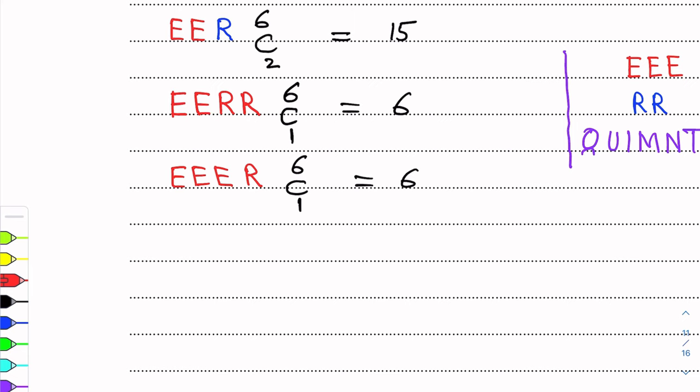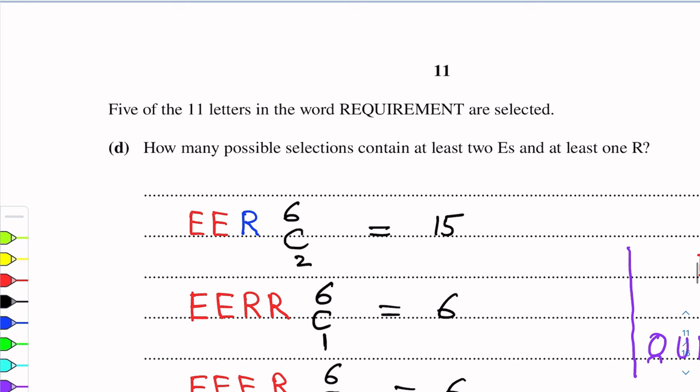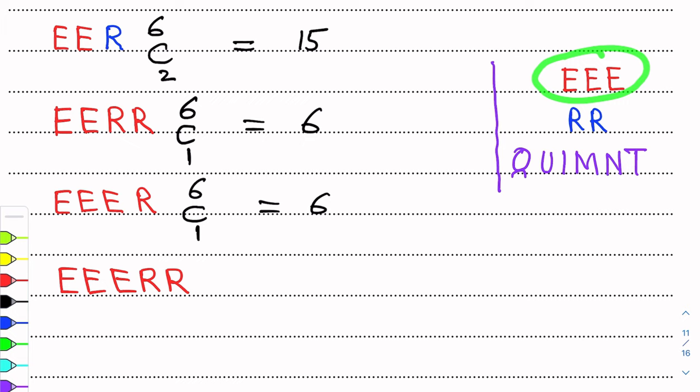Another option: we take 2 E's and 2 R's. That's 4 selected. We need 1 more from the 6 others. 6 choose 1 equals 6.